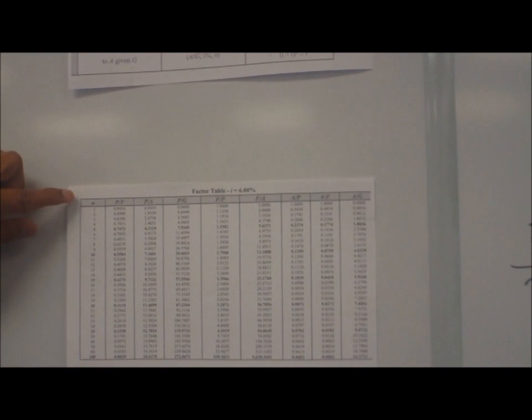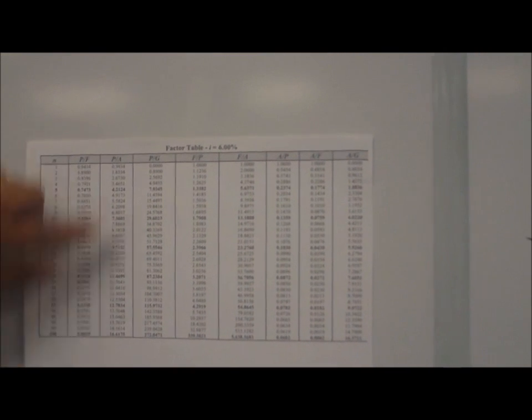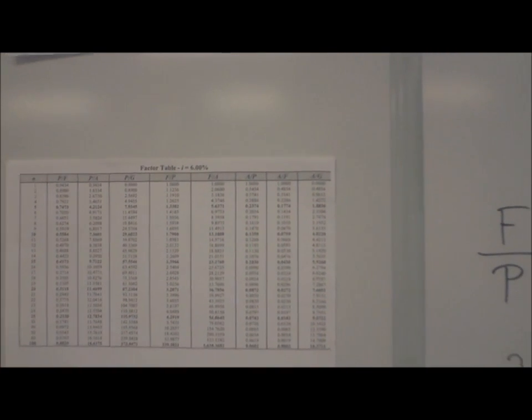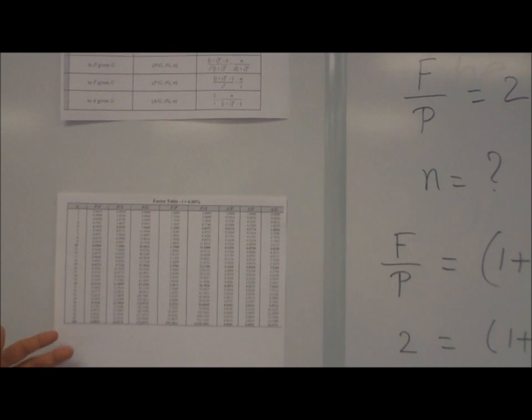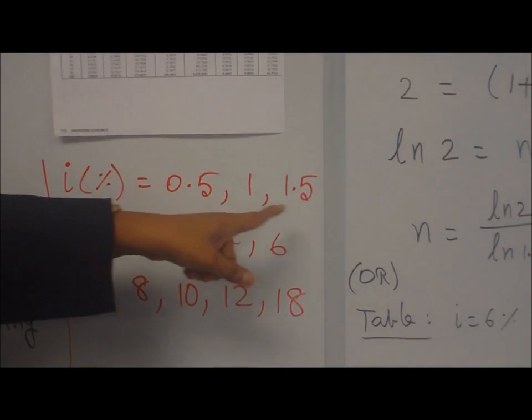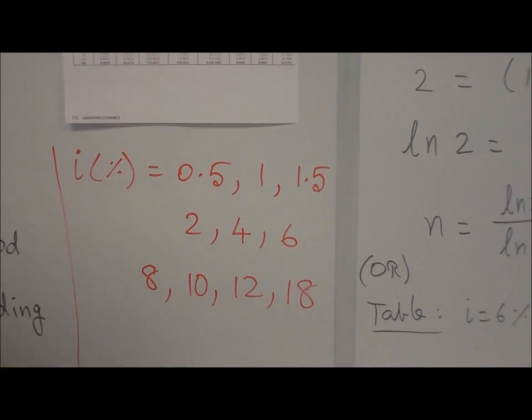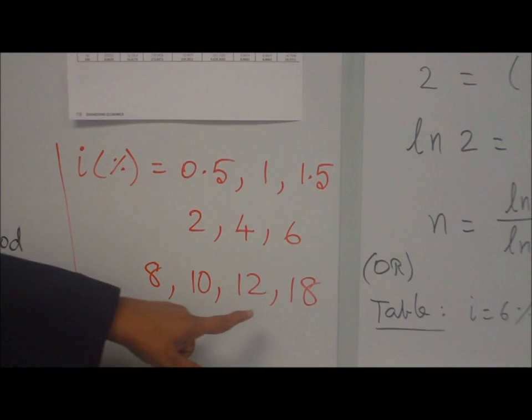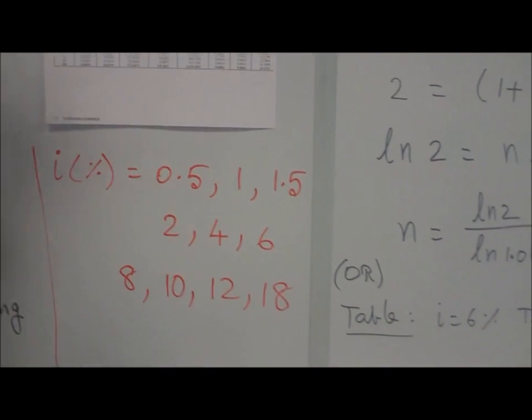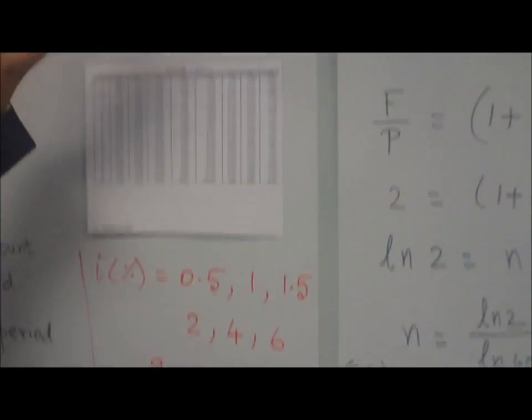I just picked for I equal to six percent. You can see for various values of N, number of years, varies one to hundred. You have all the ratios are given in the table. In the reference handbook, the tables are available for I equal to point five percent, one percent, one point five percent, two percent, four percent, six percent, eight percent, ten percent, twelve percent, eighteen percent. Suppose you have nine percent you need, then you don't have a table. You need to use a formula.